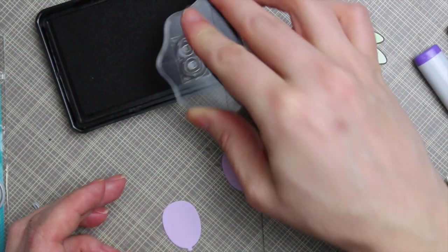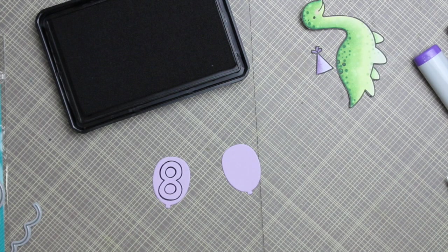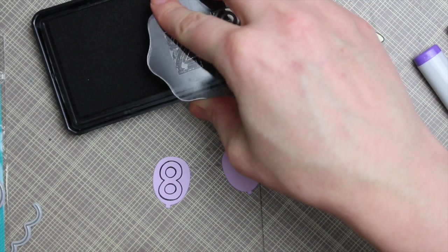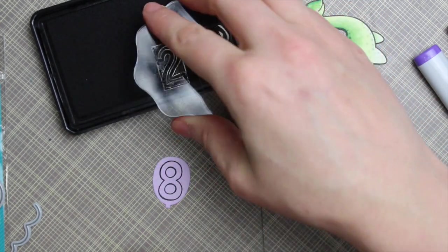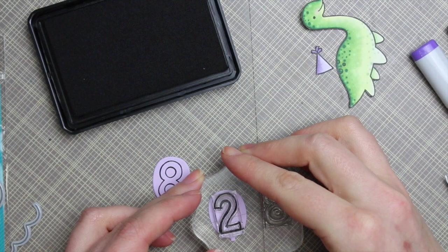And once that was done, I die cut some light purple cardstock using the My Favorite Things Birthday Balloons Dynamics. And then I stamped the numbers 82. This is from the Lawn Fawn Quinns 123's stamp set.